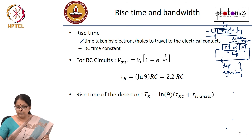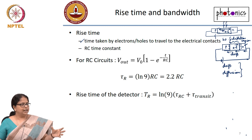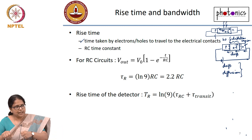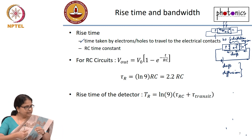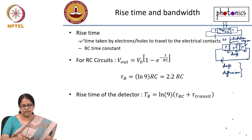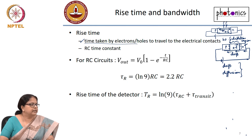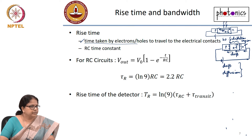Drift velocity is faster; diffusion velocity is much slower. The whole transit time for the electron to complete the circuit is decided by drift plus diffusion. So when a photon is incident, the electron-hole pair gets generated, then it has to drift, diffuse, and then take the external circuit path — so there is a delay. That is the first reason for the rise time or delay that limits the bandwidth of the system.